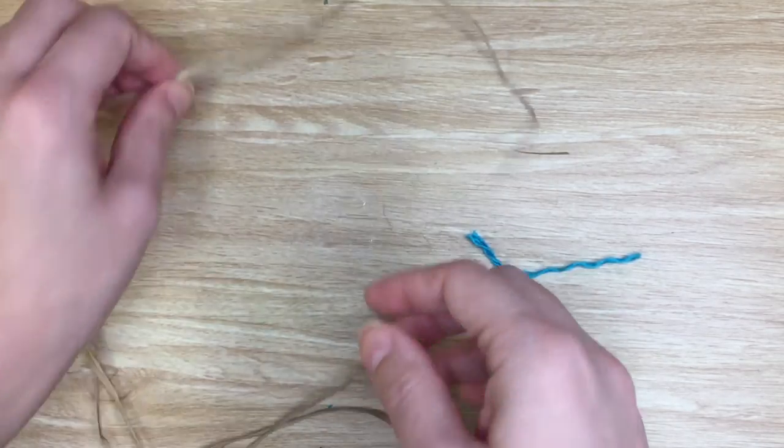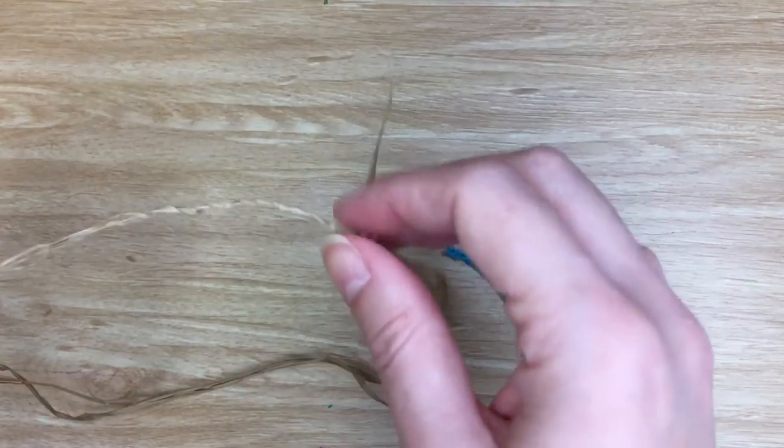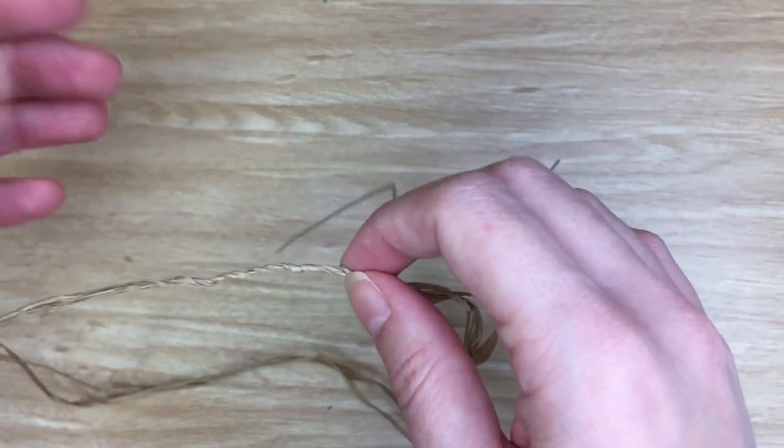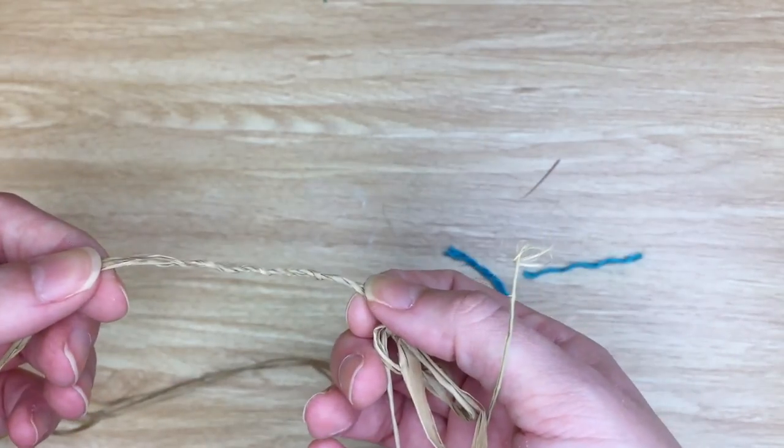That causes it to hold and form our braid. So if we were to undo it, it would start coming unraveled.